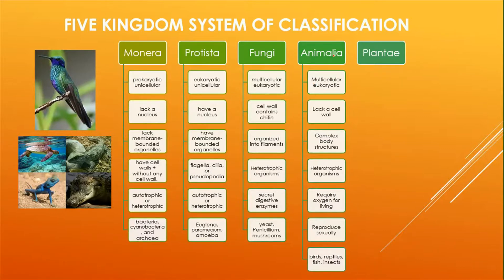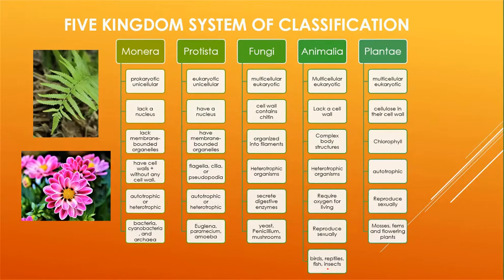Next is Animalia. Multicellular eukaryotic organisms are present in Animalia. Animals do not have a cell wall. Their body is very complex — cells are arranged into tissues, then organs, and then organ systems. They are heterotrophic, dependent on other organisms for food, require oxygen for living, and reproduce sexually, meaning they have two sexes: male and female. Examples include birds, reptiles, fish, insects, and humans.